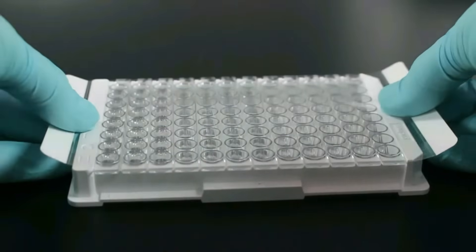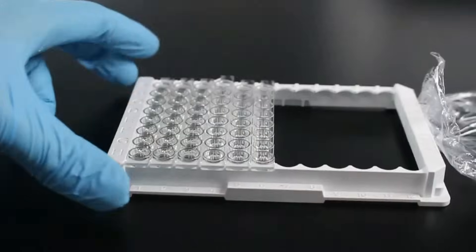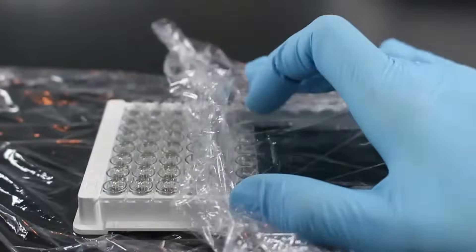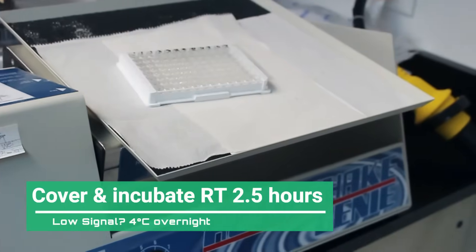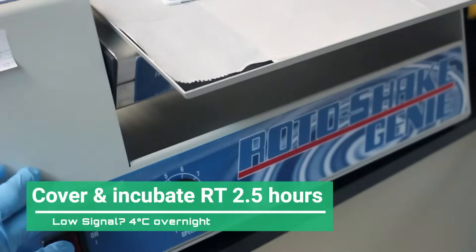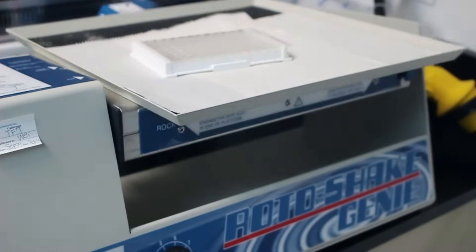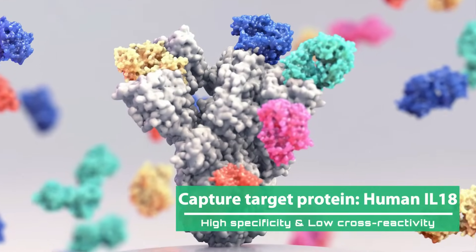Seal the ELISA plate to prevent contamination. If you are running fewer strips, you can use plastic wrap. Cover and incubate at room temperature for two and a half hours. If you have low signal, you can incubate at four degrees overnight. Many times, this is recommended. During the incubation, the target protein will be captured with high specificity and low cross-reactivity.